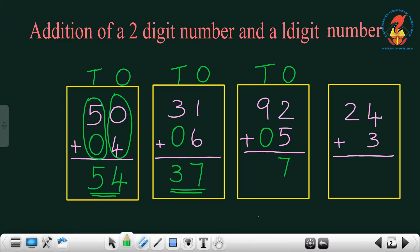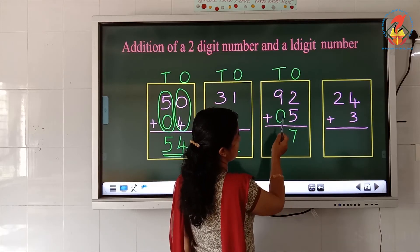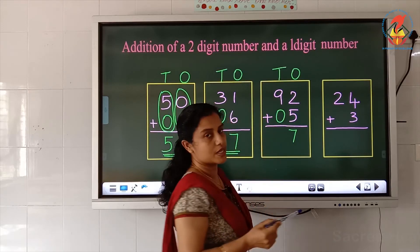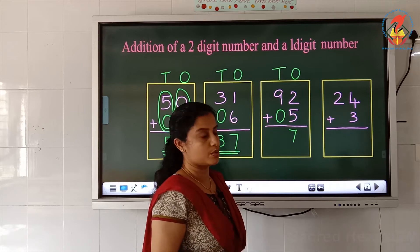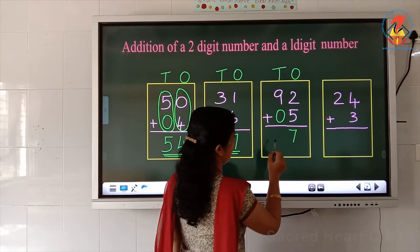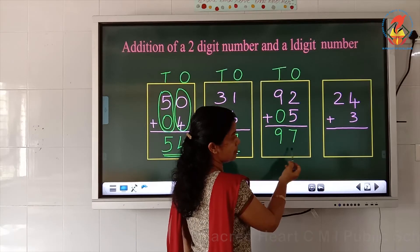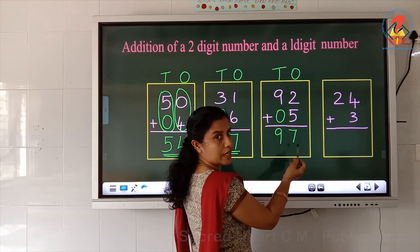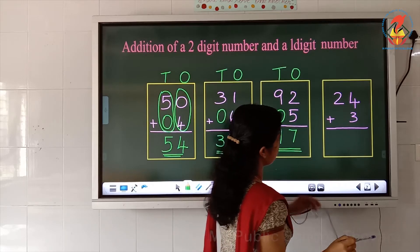Now which are the numbers in the tens place? 9 and 0. What is 9 plus 0? 9 plus 0 is 9. So the answer is 97.